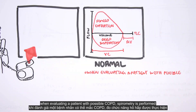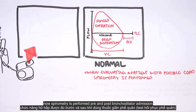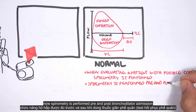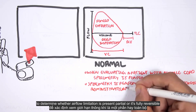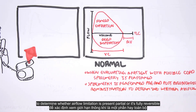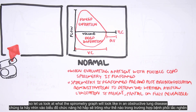When evaluating a patient with possible COPD, spirometry is performed pre and post bronchodilator administration to determine whether airflow limitation is present, partial, or fully reversible. Let us look at what the spirometry graph will look like in an obstructive lung disease.